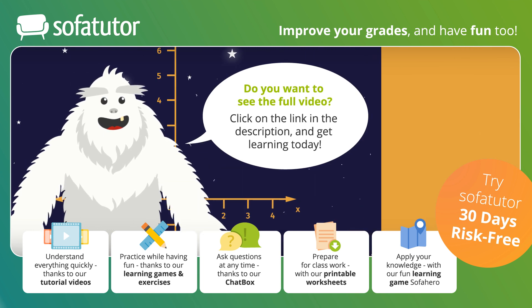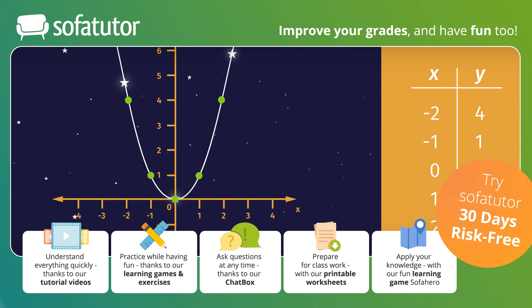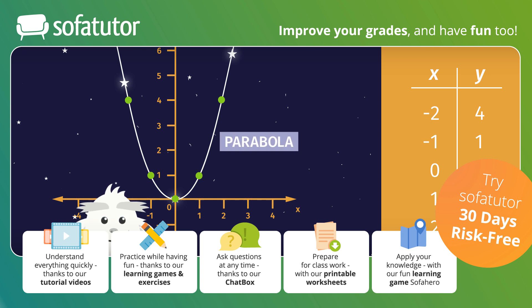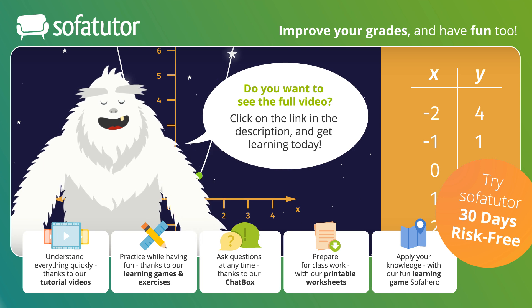Let's graph y equals x squared. To do this, we can create a function table and calculate a few points, then graph. If x equals negative 2, then y equals 4. If x equals negative 1, y equals 1. And so on. Notice the shape of this function. This distinctive u shape is called a parabola. When you have a quadratic equation, the graph is always a parabola.